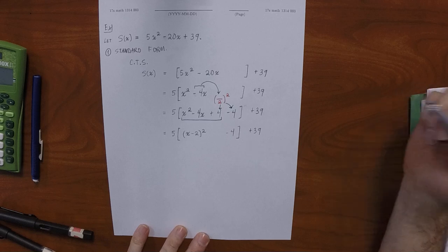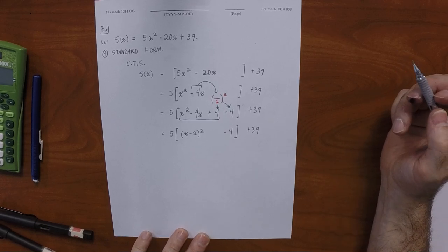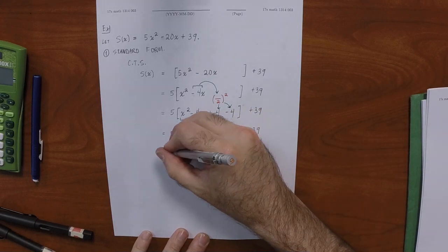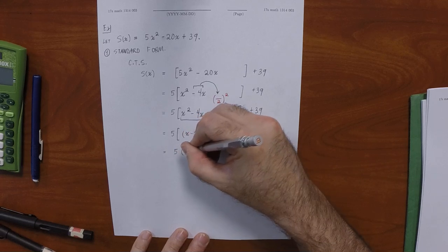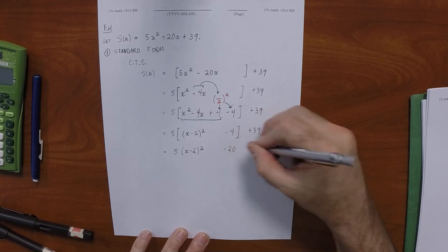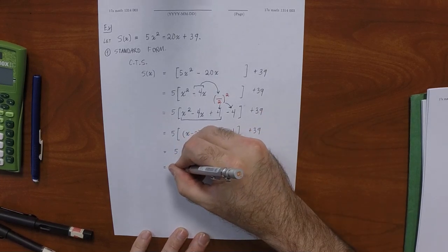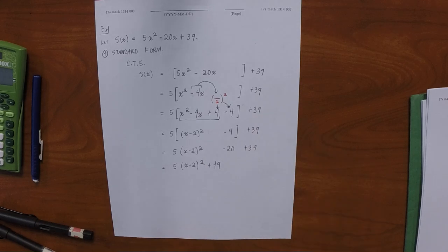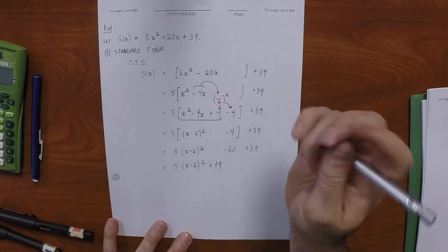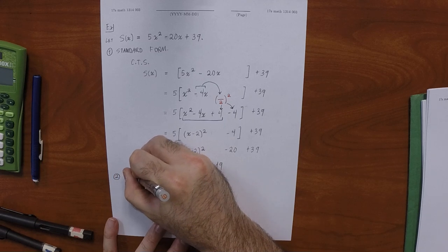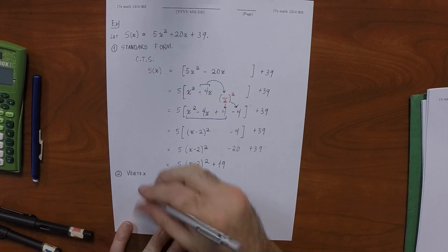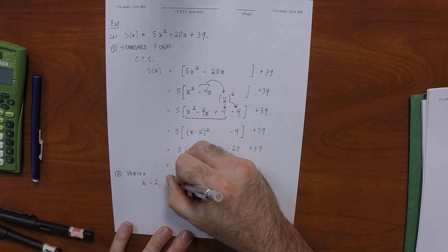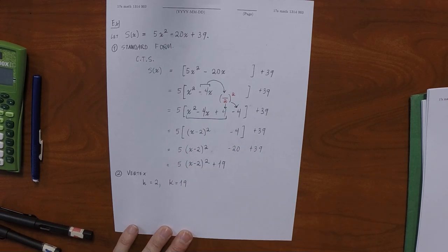The hard work is over but there's still work to do — we need to distribute the 5. That gives 5 times x minus 2 squared, then minus 20, then plus 39, which equals 5 times x minus 2 squared plus 19. We now have it in standard form. The coordinates of the vertex: h is 2, k is 19.